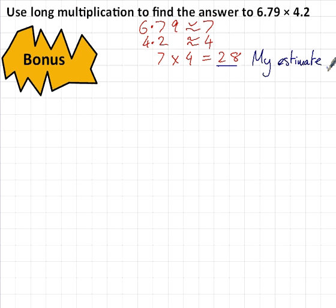Okay, so, as with the previous example, what I'll do is hide these decimal points and carry out the multiplication as if it were 679 times 42. Okay, hundreds, tens, units, 6, 7, 9, times 42.